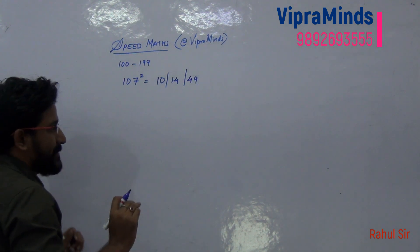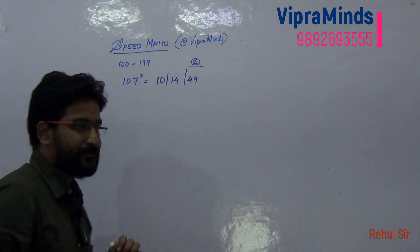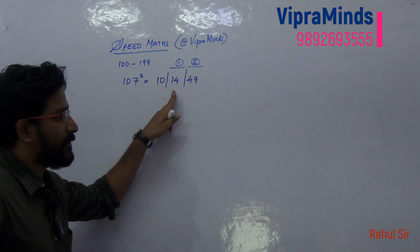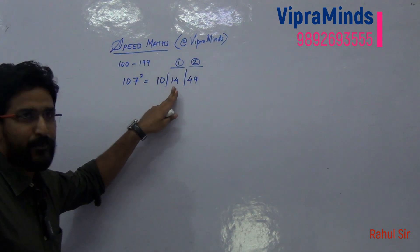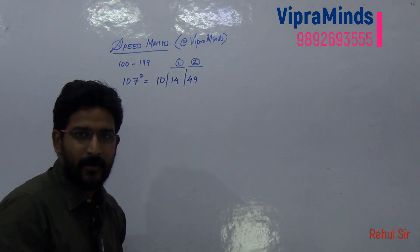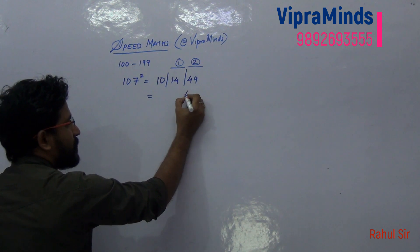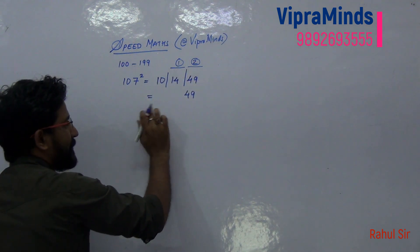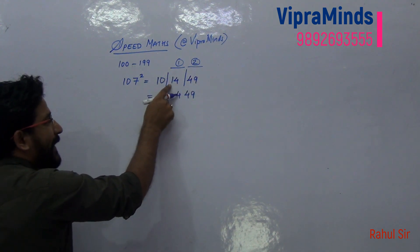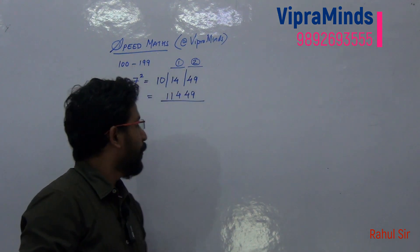Now the last step: the last block should have at most two digits, and the middle block should have at most one digit. So 49 stays as is — it's already two digits. For 14, we write 4 in the middle block and carry forward 1 to the left-most compartment. So it will be 10 plus 1, which is 11. So your answer will be 11449.